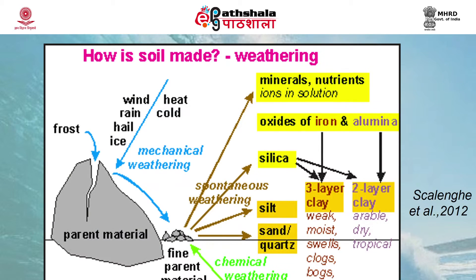Another factor is microbial activity. Some microbial activity releases organic acidic compounds which can break down iron and aluminium minerals in the rocks. Microscopic organisms like algae, moss, lichens, and bacteria grow on the surface of the rocks and produce organic chemicals capable of breaking down the outer layer of the rocks by altering their chemical composition. These microscopic organisms also bring about a moist chemical microenvironment which enhances the chemical and physical breakdown of the rock surfaces.